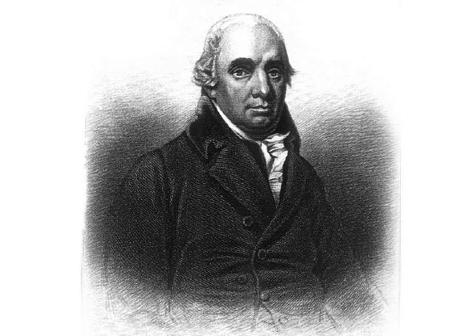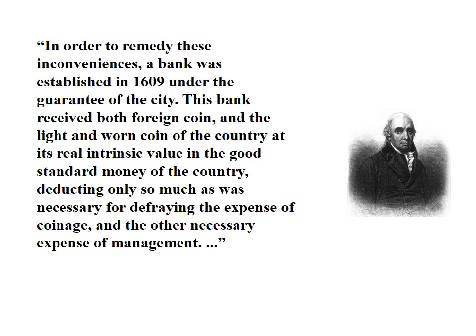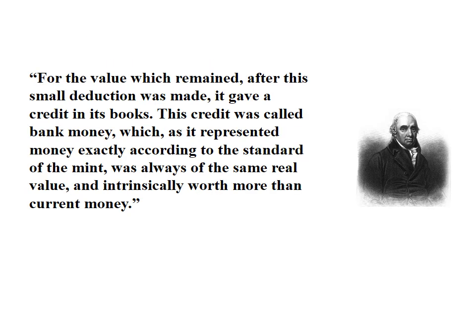And then the Bank of Amsterdam began doing business. Smith continues: In order to remedy these inconveniences, a bank was established in 1609 under the guarantee of the city. This bank received both foreign coin and the light and worn coin of the country at its real intrinsic value in the good standard money of the country, deducting only so much as was necessary for defraying the expense of coinage and the other necessary expense of management. For the value which remained, after this small deduction was made, it gave a credit in its books. This credit was called bank money, which, as it represented money exactly according to the standard of the mint, was always of the same real value and intrinsically worth more than current money.